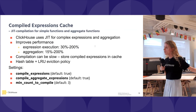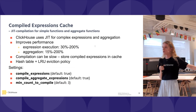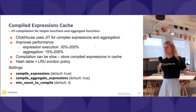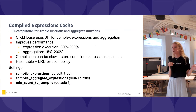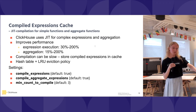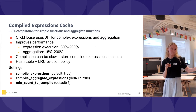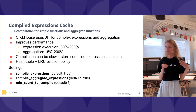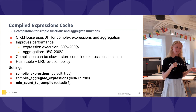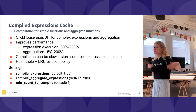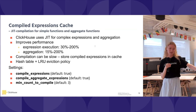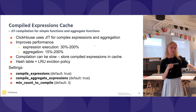Compiled expressions cache: as you might know, ClickHouse has JIT compilation. If you have some complex expressions in your queries, JIT compilation can be used. If you set a minimum count to compile, and your query has been used that number of times, it will be compiled. Compilation does take time, and it would not be efficient to compile queries each time. Therefore, we have compiled expressions cache. Due to it, compiled expressions are more efficient — in some cases there is actually a lot of benefit.